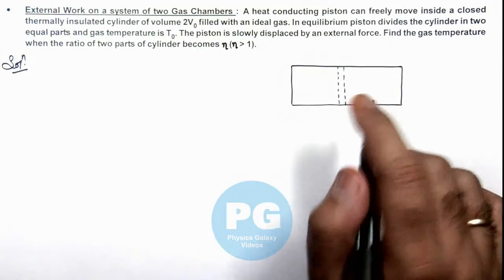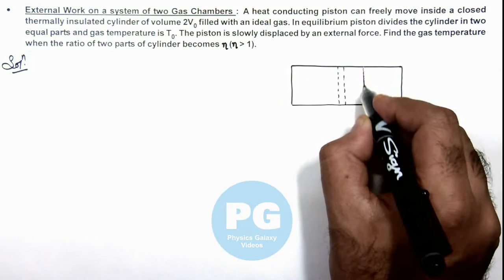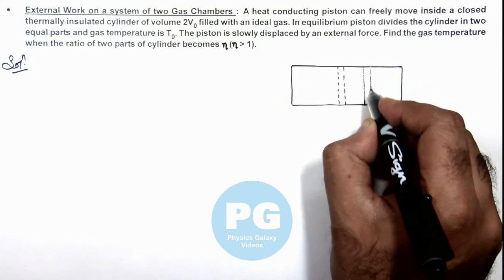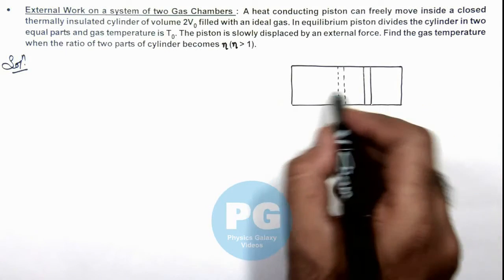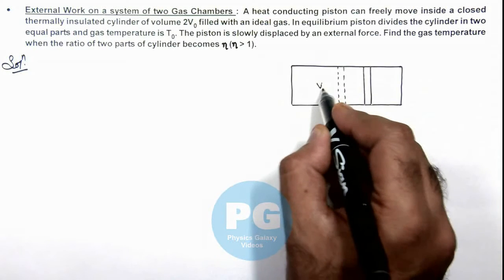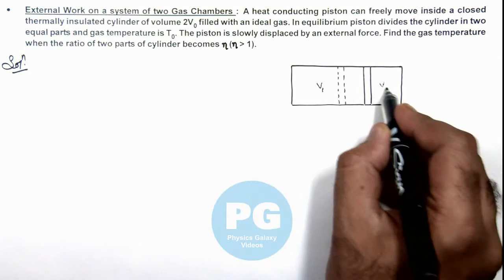Now say if by an external force the piston is displaced to this position, on one side, say left hand side, the volume of gas is V₁, and on right hand side say it is V₂.